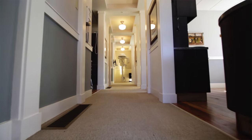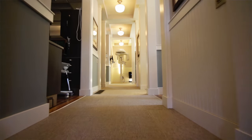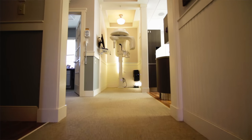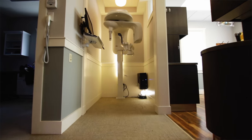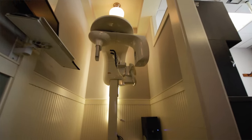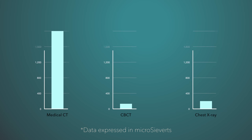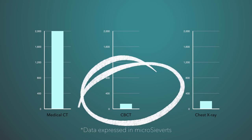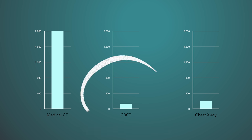CBCT scans produce three-dimensional images similar to traditional medical CTs. The CBCT, however, is more advanced and can produce a 3D image of a very specific area in just one rotation of the machine. This occurs within seconds and without the patient having to lie down. CBCT scans specifically focus on small areas of the mouth, resulting in radiation dosages several hundred times lower than traditional medical CTs — even lower than a chest x-ray.